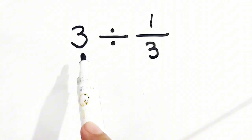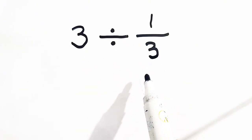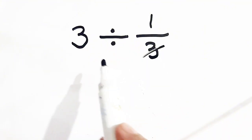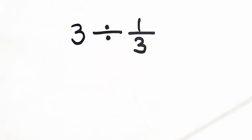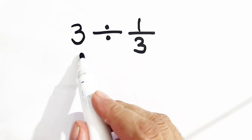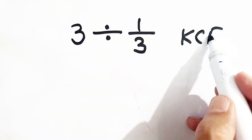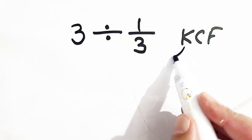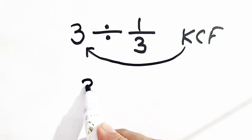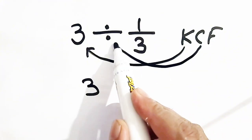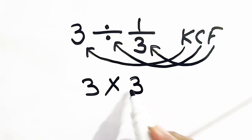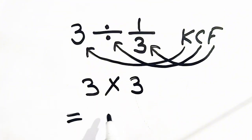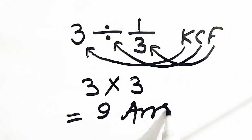The second question is 3 divided by 1 by 3. People make the mistake of cancelling 3 and 3, so their answer is 1, but that is the wrong approach. This can be solved using the KCF rule: K means keep it, C means change it — divided is changed into multiplication — and F means flip it. So 1 by 3 is flipped and becomes 3. Our answer is 3 times 3, which equals 9.